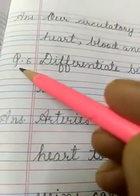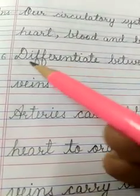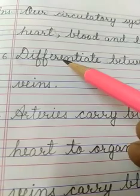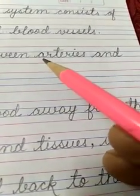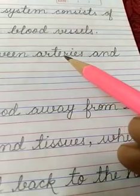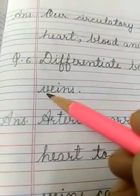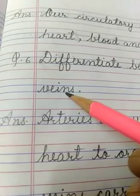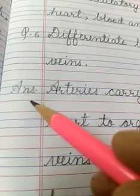Next, come to question number 6, differentiate D-I-F-F-E-R-E-N-T-I-A-T-E, differentiate between arteries, A-R-T-E-R-I-E-S, arteries and veins, V-E-I-N-S, veins. Come to answer number 6.